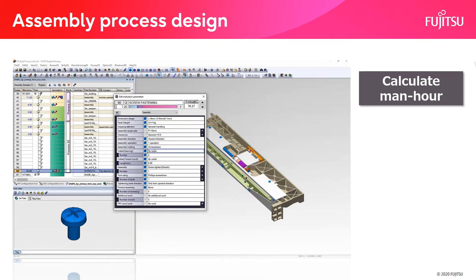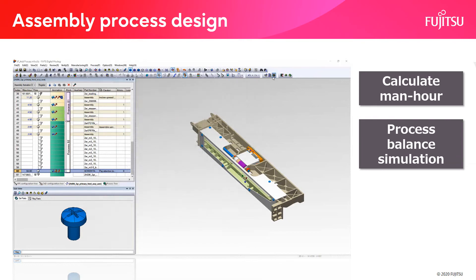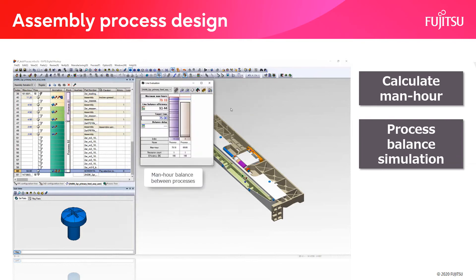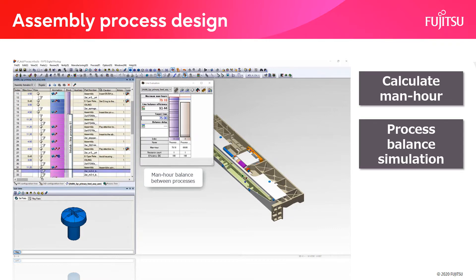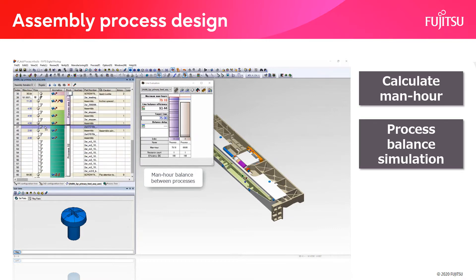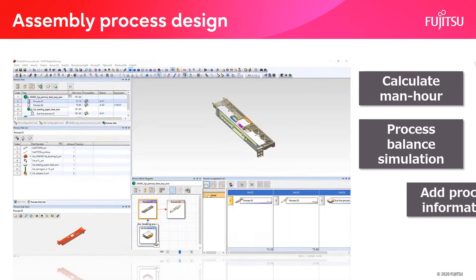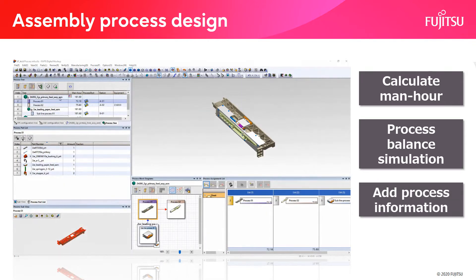Based on that time, check the work balance between processes, and if the balance is not good, make improvements by changing the procedure. It is also possible to display and check process information such as the total operation time of each process.